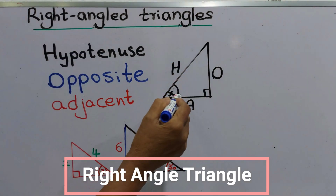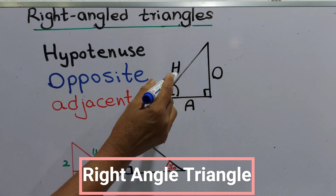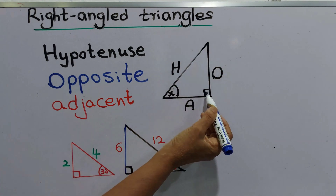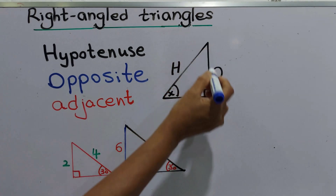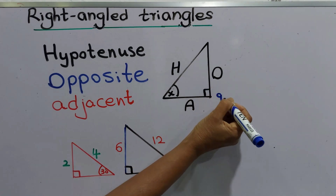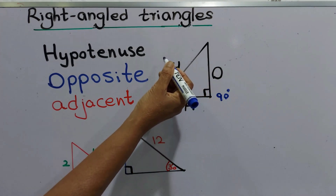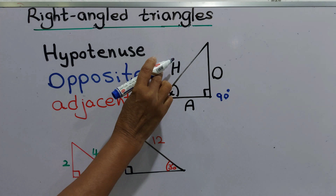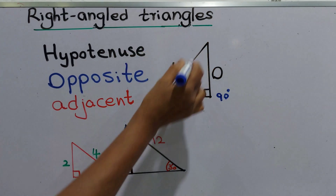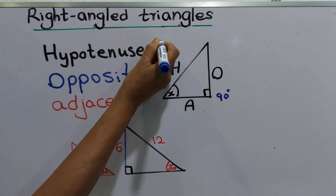Look at this right angle triangle. This is the right angle, which means 90 degrees. The side opposite the right angle is called the hypotenuse — it is the longest side of the right angle triangle.